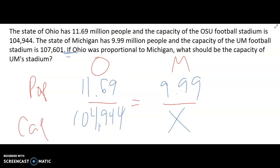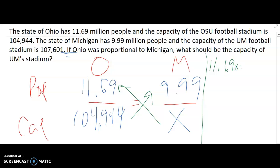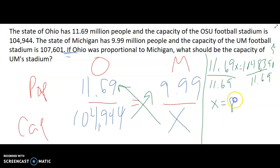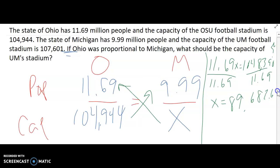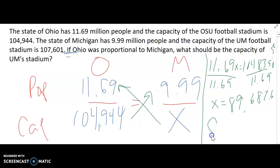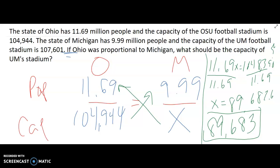From here, we cross-multiply and divide to solve. So we get 11.69x equals 1,048,390.56. Dividing both sides by 11.69 — the population in millions of Ohio — I get roughly 89,682.68. Because we're talking about the capacity of a stadium, it would be 89,683. Michigan's football stadium should only hold 89,683 people if the football stadium capacity was proportional to the population of the state in comparison with Ohio.